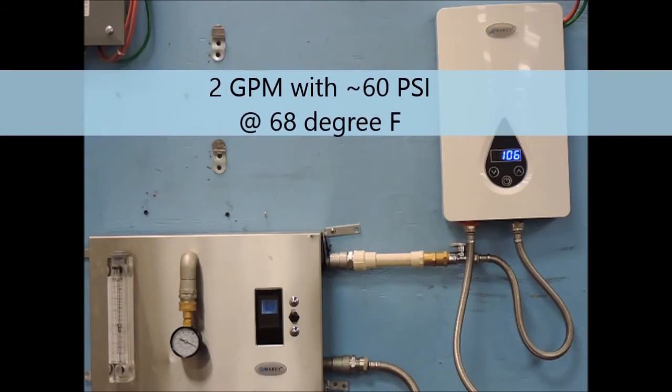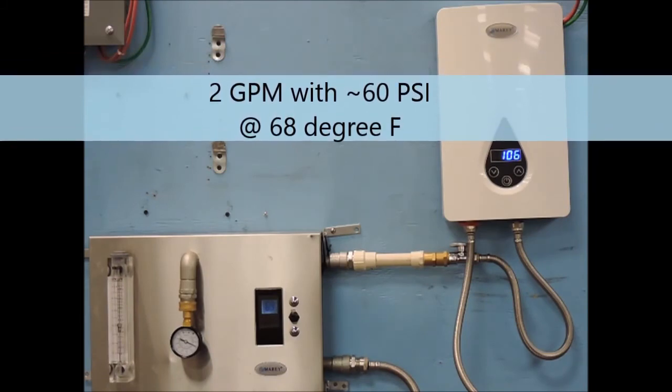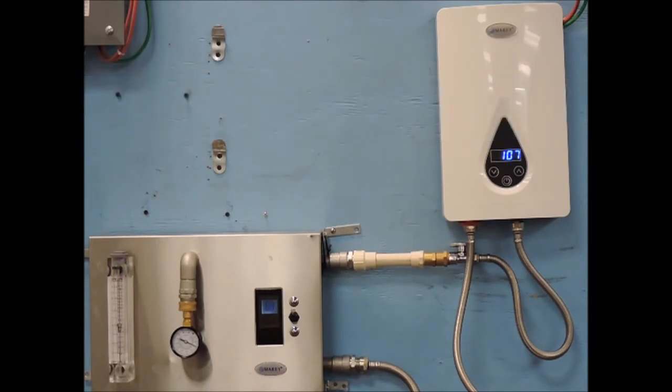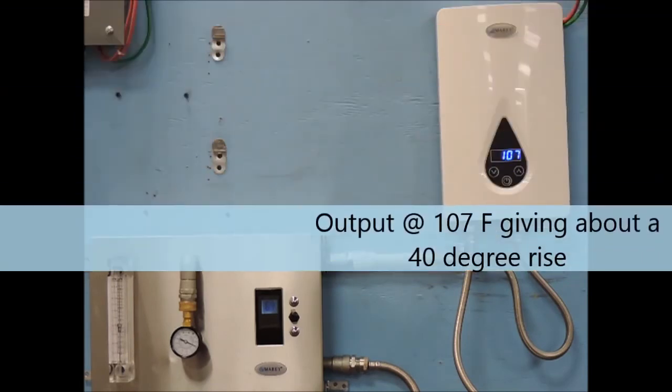On our second test, we have a flow rate of 2 gallons per minute with 60 psi and an incoming water temperature of around 69 degrees. As you can see with these inputs, we are receiving about 40 degrees rise in temperature.